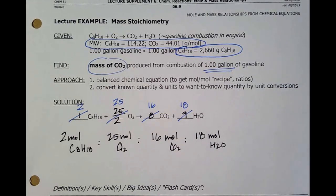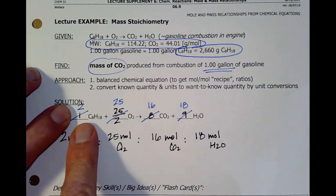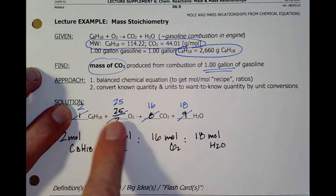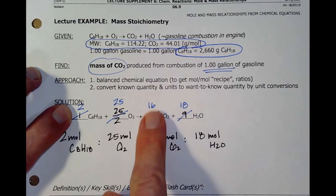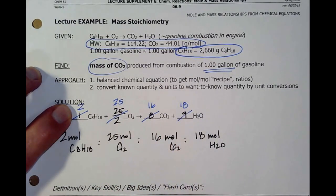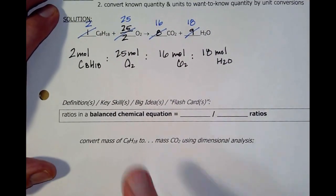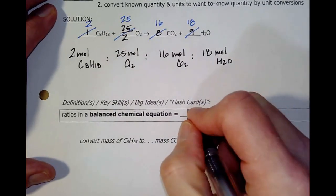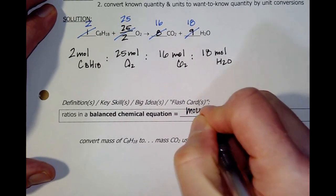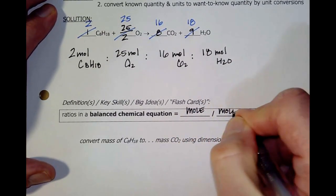Now, before we started thinking like O2 molecules reacts with 25 molecules react to produce 16 molecules and 18 molecules. Well, now when we're talking about quantities, we're going to really think of moles. So, what this really is is two moles of C8H18 to 25 moles O2 to 16 moles of CO2 to 18 moles of water. So, for quantities, we're going to think of moles. Now, this becomes my recipe.